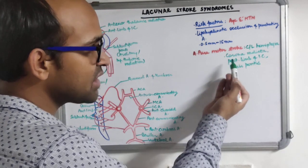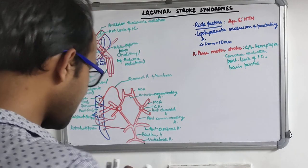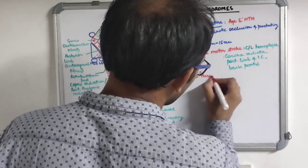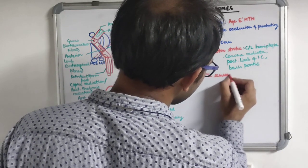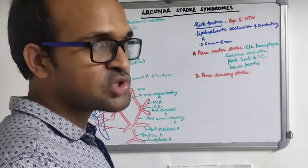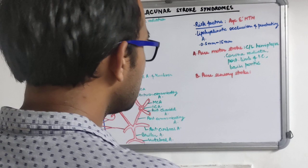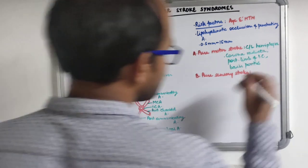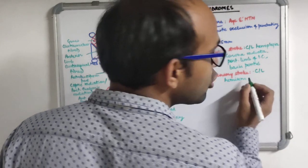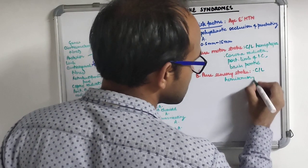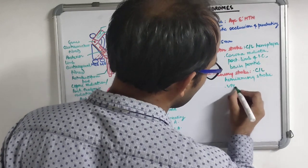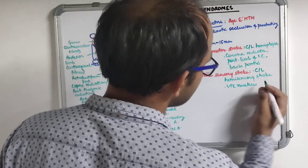Another syndrome is pure sensory stroke, which means isolated hemisensory loss on the contralateral side. It occurs if there is an injury in the area of the ventroposterolateral nucleus of the thalamus. If the ventroposterolateral nucleus of the thalamus is affected, it can result in pure sensory stroke.